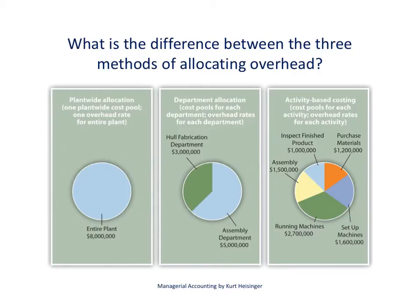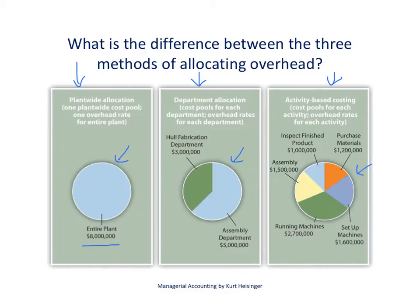In a separate video we talk about allocating overhead using the plant-wide allocation approach, which is the first box here, and allocating overhead using the department allocation approach. This video focuses on activity-based costing. What I want to show here is that we're dealing with the same $8 million dollars in overhead costs related to production — we're just using three different possibilities of how to allocate that $8 million dollars to our products.